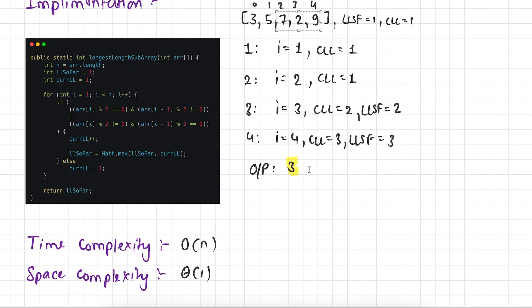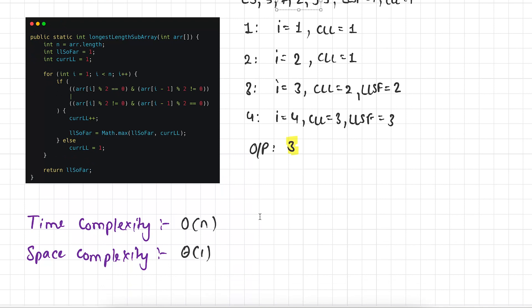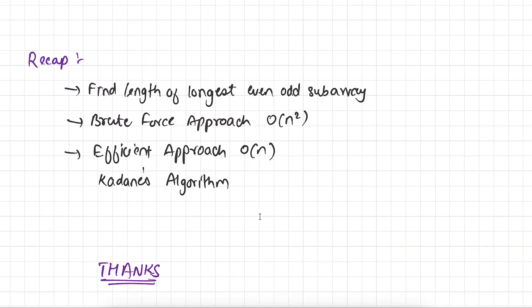Now talking about the time complexity: as you can see we are running only one loop from 1 till less than n, so the time complexity is O(n). We are not using any auxiliary space, so the space complexity is θ(1). To recap: in this problem we are given an array and our task was to find the length of the longest even-odd subarray. We saw the brute force approach which took O(n²) time, then the efficient approach based on Kadane's algorithm which took O(n) time. This is it for this video — thanks for watching, see you in the next video.